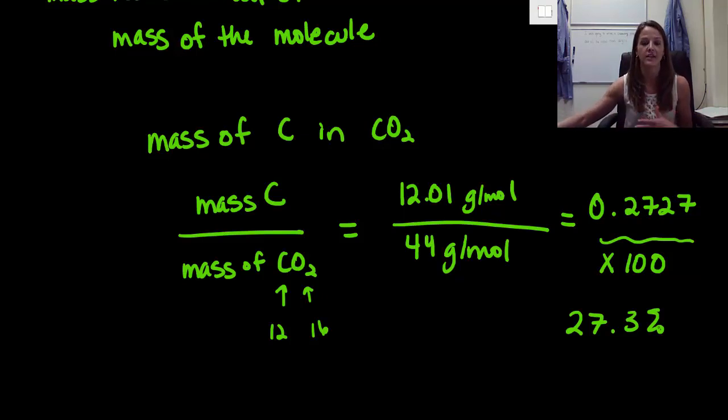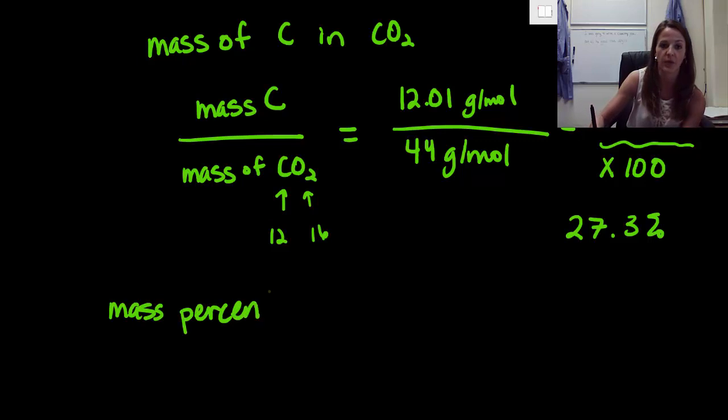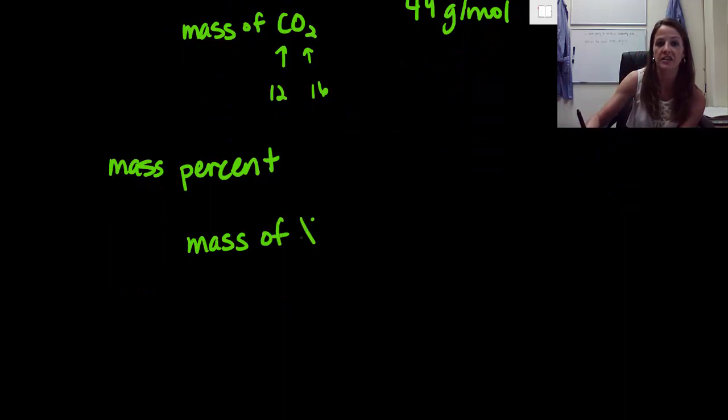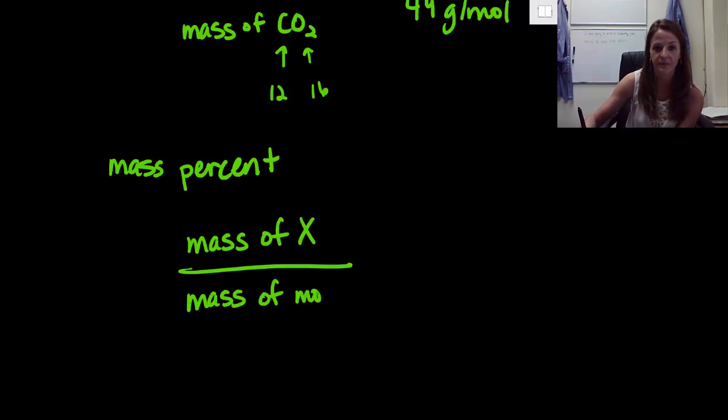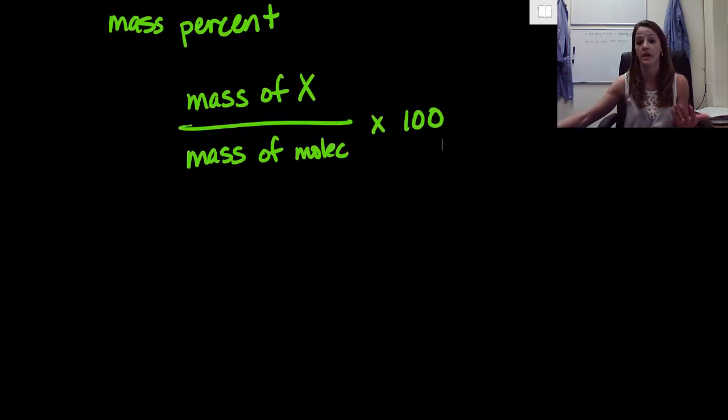So let's talk about what that is. What is that 27.3? Well, we actually call that mass percent, and this is a much more useful term than mass ratio. So mass percent would just be your mass of your element, of element X, divided by your mass of your molecule times 100. And this will give us a very valuable piece of information.